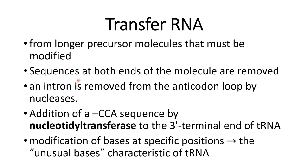The sequences at both ends of the tRNA (5' to 3') must be clipped. The tRNA also contains an intron sequence present in the anticodon loop, which must be cleaved by nucleases. At the 3' end, the usual nucleotide sequence must be cleaved, followed by addition of the CCA nucleotide sequence at the 3' end by the enzyme nucleotidyl transferase.